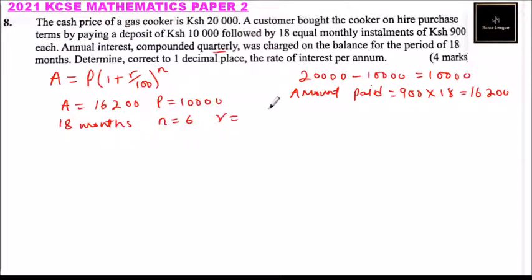Because it was compounded quarterly, we use r divided by four in the formula. So 16,200 equals 10,000 times bracket one plus r over four, all over 100, raised to power 6.